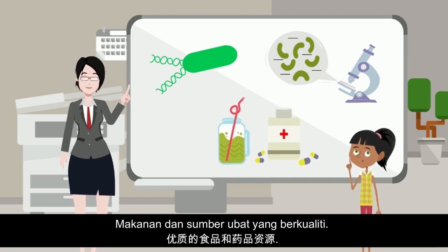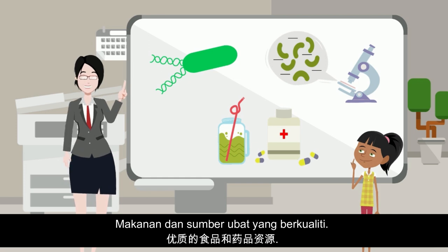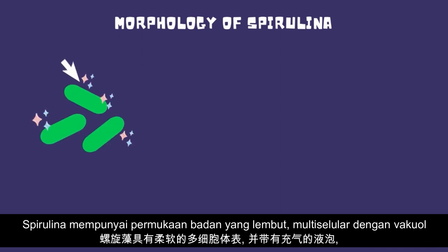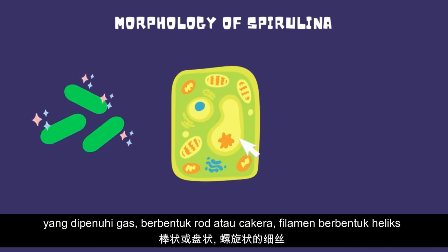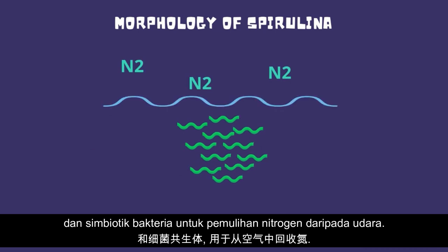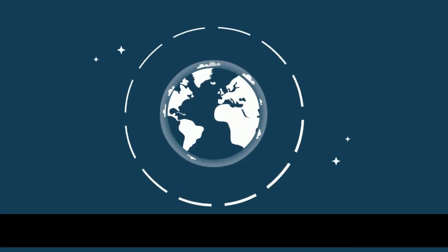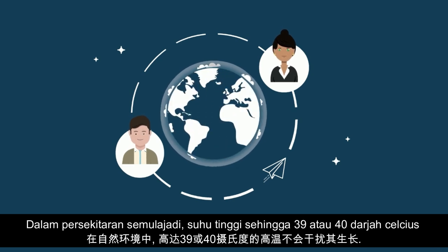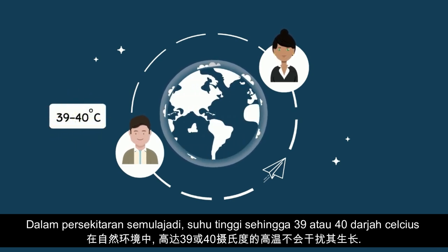Spirulina is also an ideal food and quality drug resource. Let's see the morphology of spirulina. It has a smooth body surface, is multicellular with gas-filled vacuoles, rod-shaped or disc-shaped, has filamentous helical-shaped filaments, and is a symbiotic bacteria that fixes nitrogen from air.